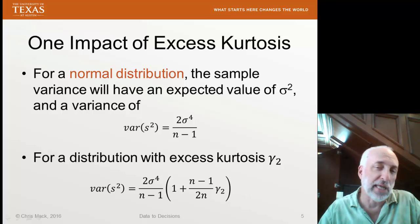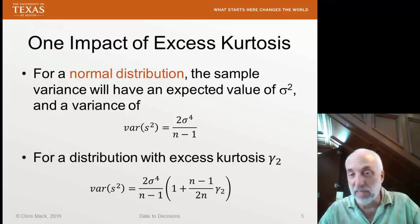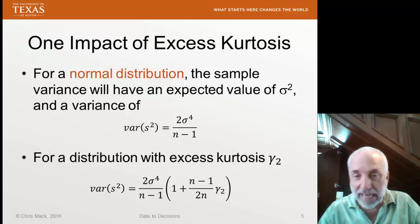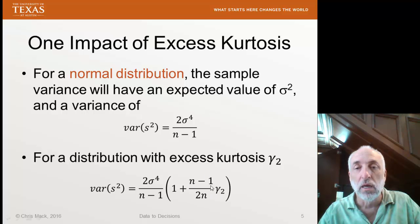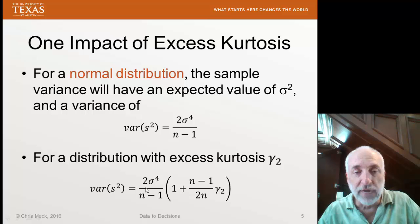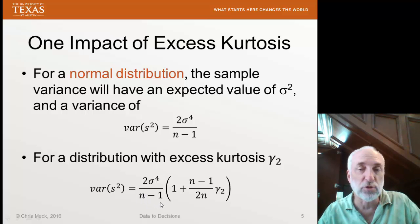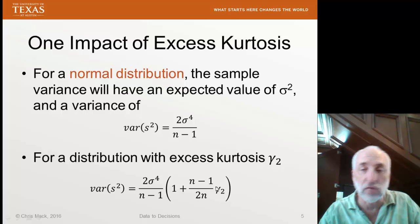How does that work? Well, let's look at the case where n is kind of large compared to 1. So maybe n is 100, for example. This thing out front here is about 1 half. So the variance of our sample variance will be the same variance we would expect if we had a normal distribution times 1 plus about 1 half times the excess kurtosis.